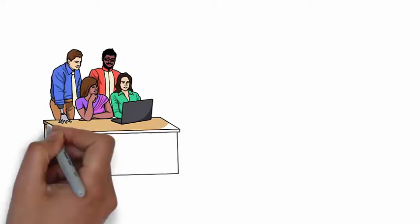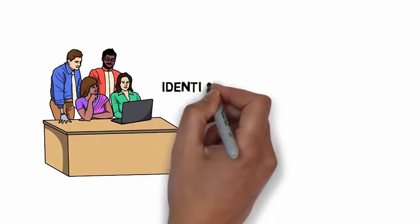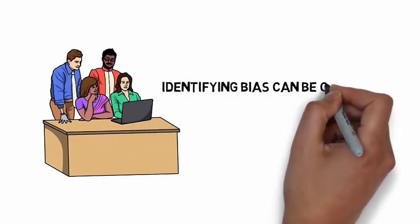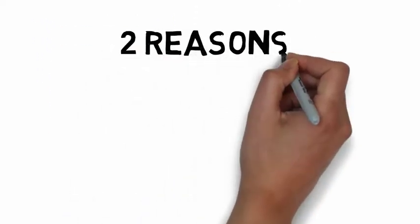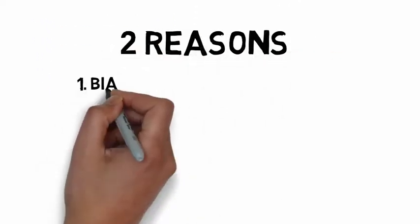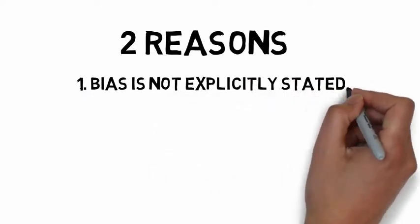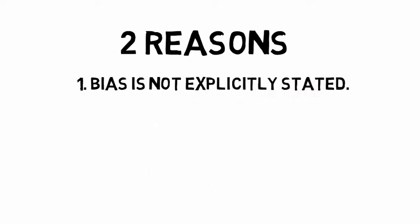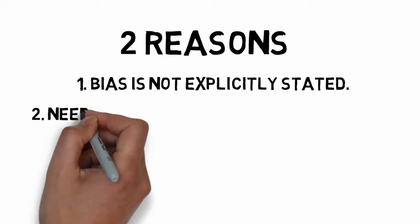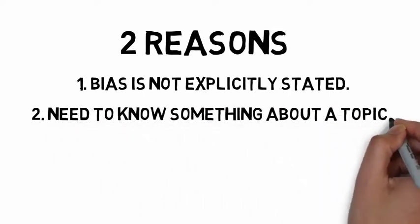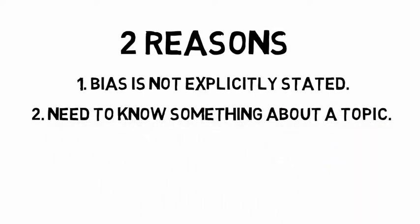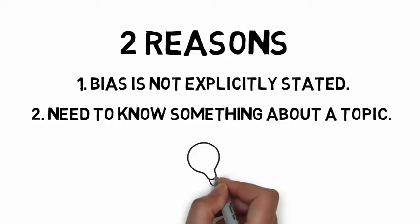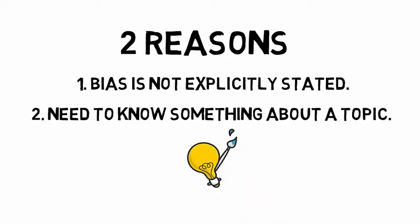But identifying an author's or organization's point of view or bias can be challenging. Why? For at least two reasons. One, because sometimes authors, including organizations, do not explicitly state their biases. And two, because we may have to know something about our topic to identify different perspectives. However, by thinking both about authorship and point of view, we can begin to understand bias in some cases.